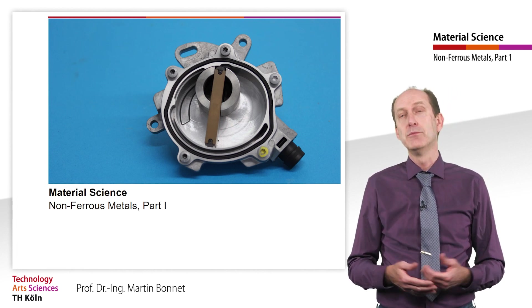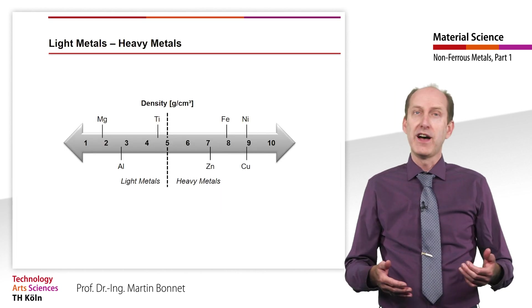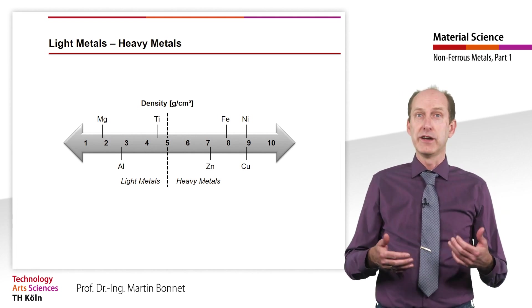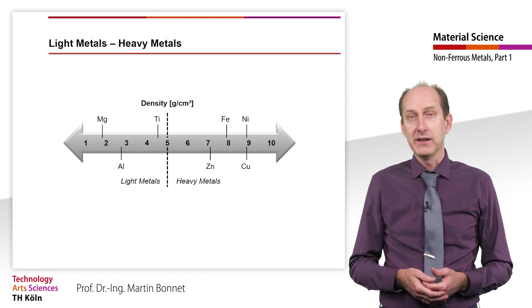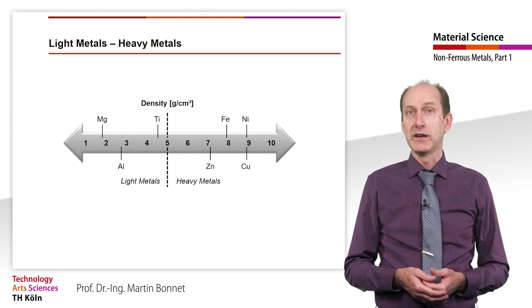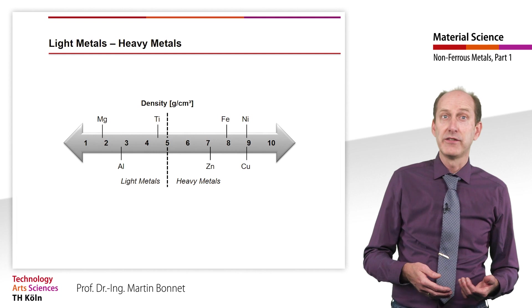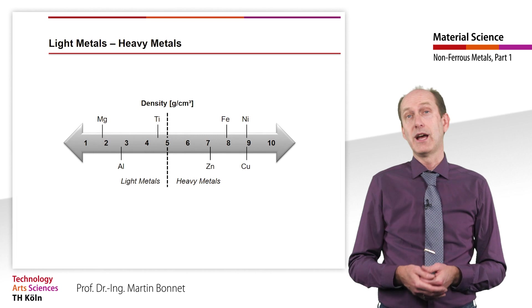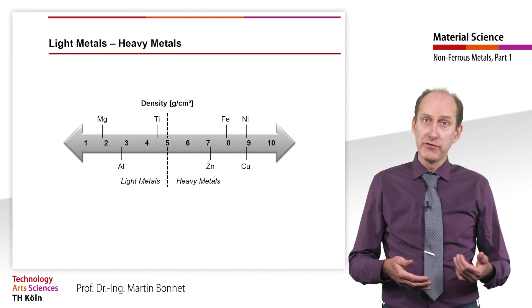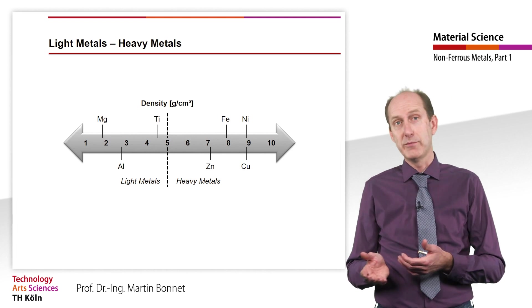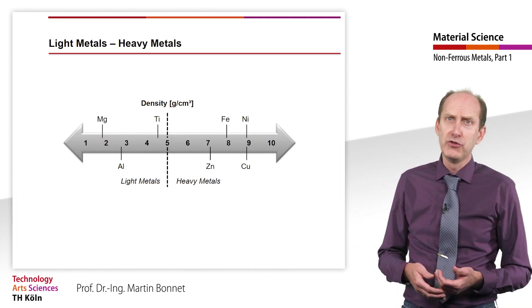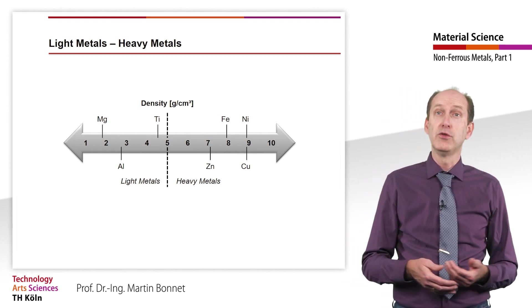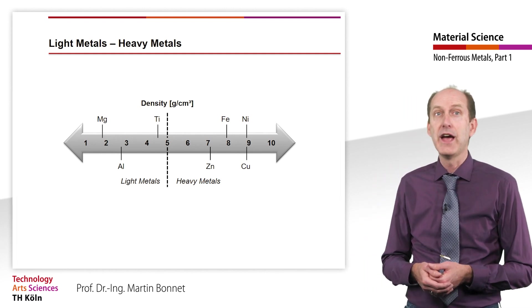So far we have dealt intensively with steel, but non-ferrous metals are in no way inferior to iron and steel in terms of their technical and economic importance. Even though consumption volumes are significantly lower, prices per kilogram are typically 2 to 10 times higher than those of steel. The group of non-ferrous metals is divided into light and heavy metals. Metals and alloys whose density is below 5 gram per cubic centimeter are generally referred to as light metals. All other metals are heavy metals.